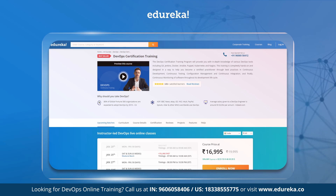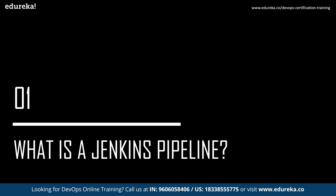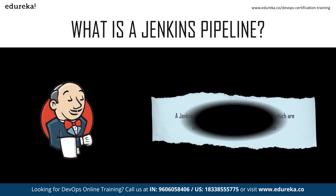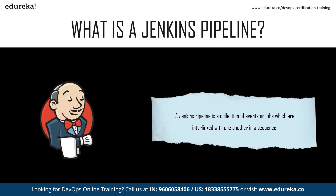What is a Jenkins pipeline? In Jenkins, a pipeline is a collection of events or jobs which are basically interlinked with one another in a sequence. It is a combination of plugins that support the integration and implementation of continuous delivery pipelines using Jenkins. In other words, a Jenkins pipeline is a collection of jobs that brings the software from version control into the hands of the end users by using automation tools.